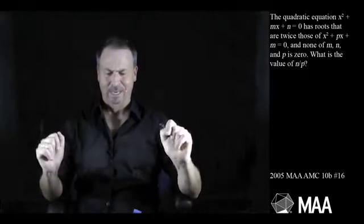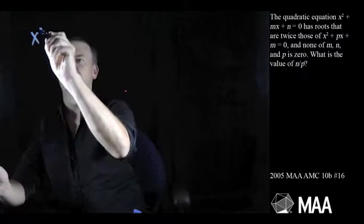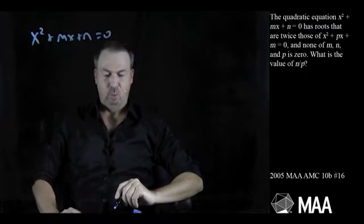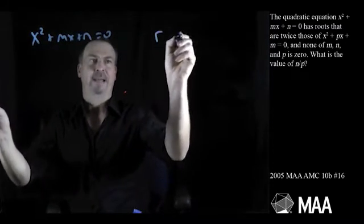Let's take this slowly. We've got the quadratic x²+mx+n=0, and it has roots that are twice those of another equation. So this has roots, say, r and s.